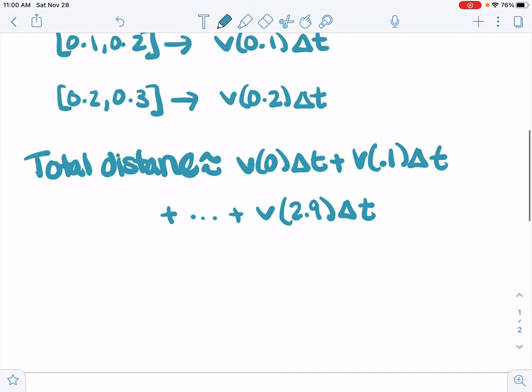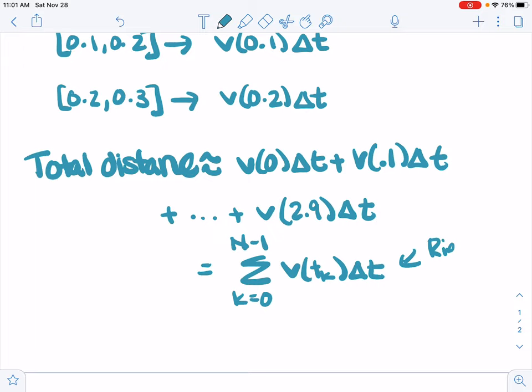And so it's a sum. We know we have a sum. It's a sum of v of t sub k times delta t, k goes from 0 to n minus 1. That sum is called a Riemann sum.